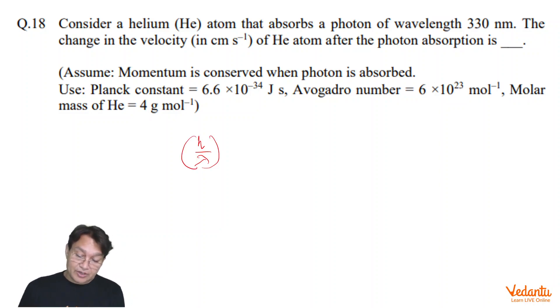p is equals to h by lambda, you are familiar with this one. So, the momentum of photon is given by h upon lambda and that must be equals to the momentum of helium atom. If we assume that helium atom was initially at rest, from this we can calculate the velocity of the helium atom or the change in velocity of the helium atom.